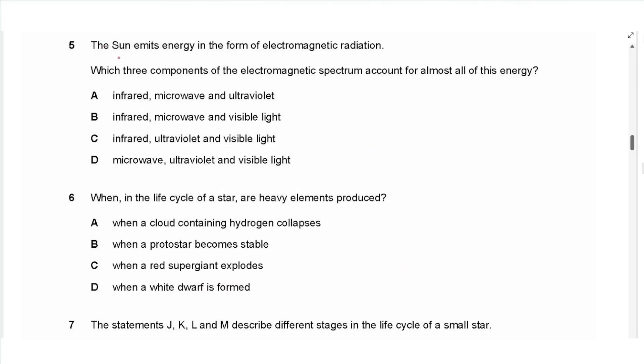The next question says, the sun emits energy in the form of electromagnetic radiation. Which three components of the electromagnetic spectrum account for almost all of this energy? Most of the energy emitted from the sun is in a range of visible light, ultraviolet, and infrared. It's not microwaves. Infrared, ultraviolet, and visible light, yes. The answer is C.